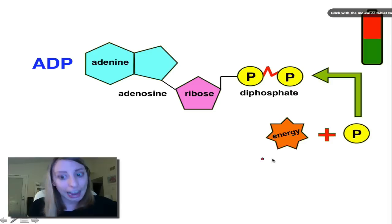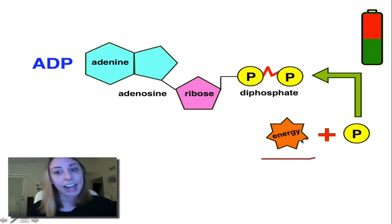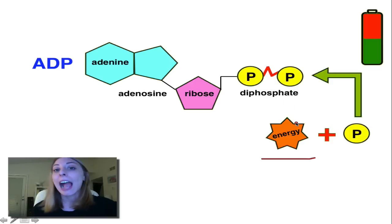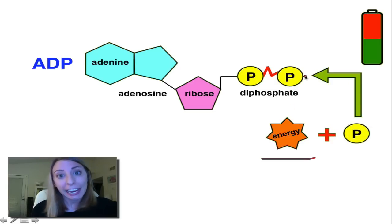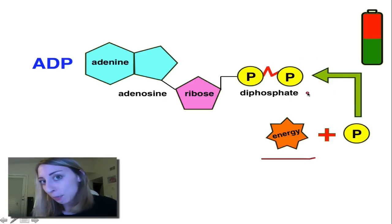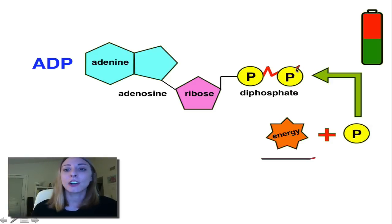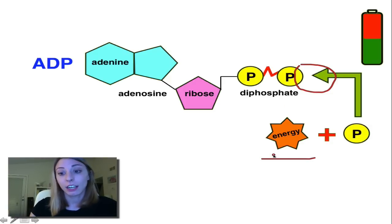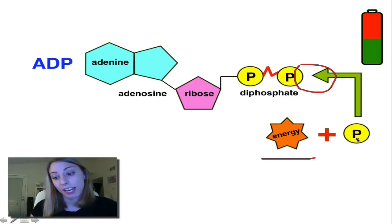It takes energy to put the phosphate back on, but it actually takes a lot less energy to add the phosphate back on ADP than it does when we release the energy from ATP. The energy released from ATP is actually a lot more than the energy required to add the phosphate back on to ADP.